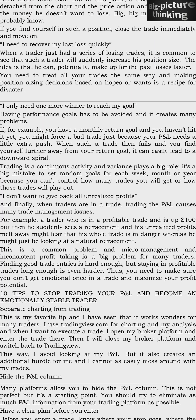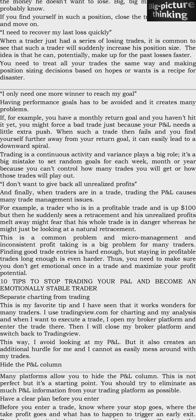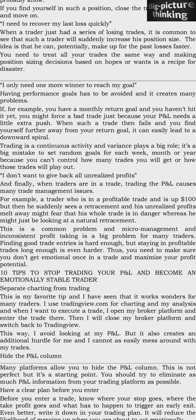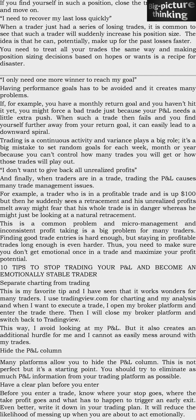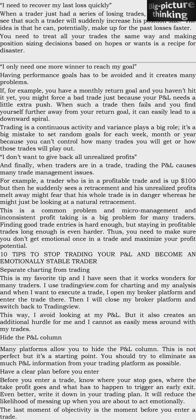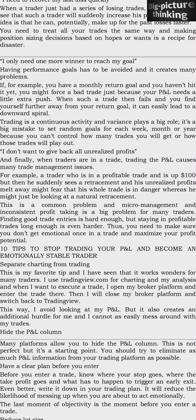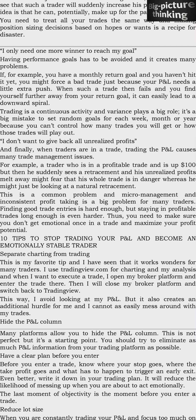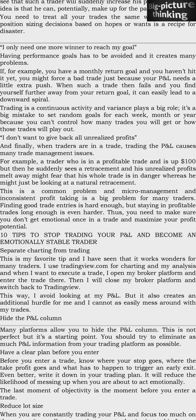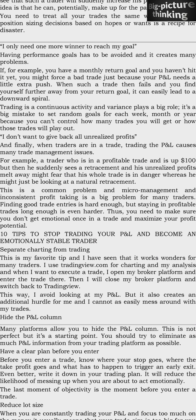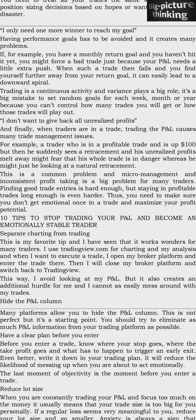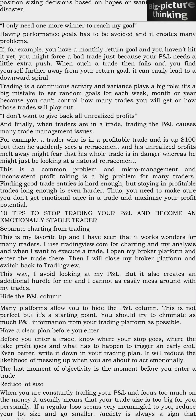The fourth mistake: 'I don't want to give back all my unrealized profits.' When traders are in a trade, P&L trading causes trade management issues. For example, a trader up $100 who sees a retracement might fear their whole trade is in danger, when it's just a natural retracement. Micromanagement and inconsistent profit taking is a big problem. Finding good entries is hard enough, but staying in profitable trades long enough is even harder.